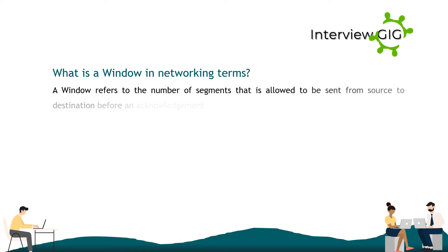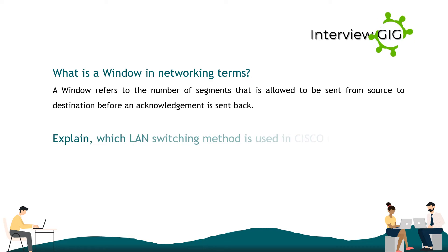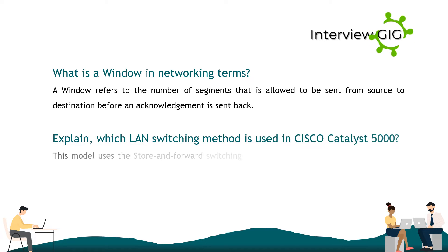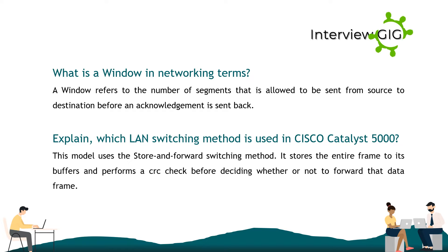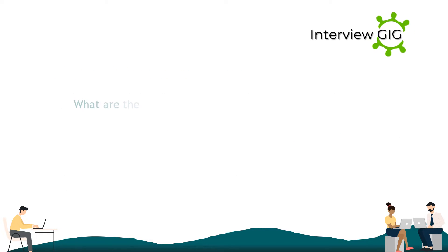Explain which LAN switching method is used in the Cisco Catalyst 5000. This model uses the store-and-forward switching method. It stores the entire frame in its buffers and performs a CRC check before deciding whether or not to forward that data frame.